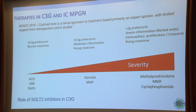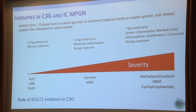Therapies in C3G and immune complex MPGN: in 2015 we said a tiered approach, and that probably still holds. If you have not much proteinuria and normal creatinine, start with standard ACE and statins. More proteinuria and more inflammation — steroids and MMF. For more crescentic, really inflammatory disease with rising creatinine, go higher with methylprednisolone, MMF, and potentially cyclophosphamide. Back then there weren't SGLT2 inhibitors — we probably need to assess where they fit in.